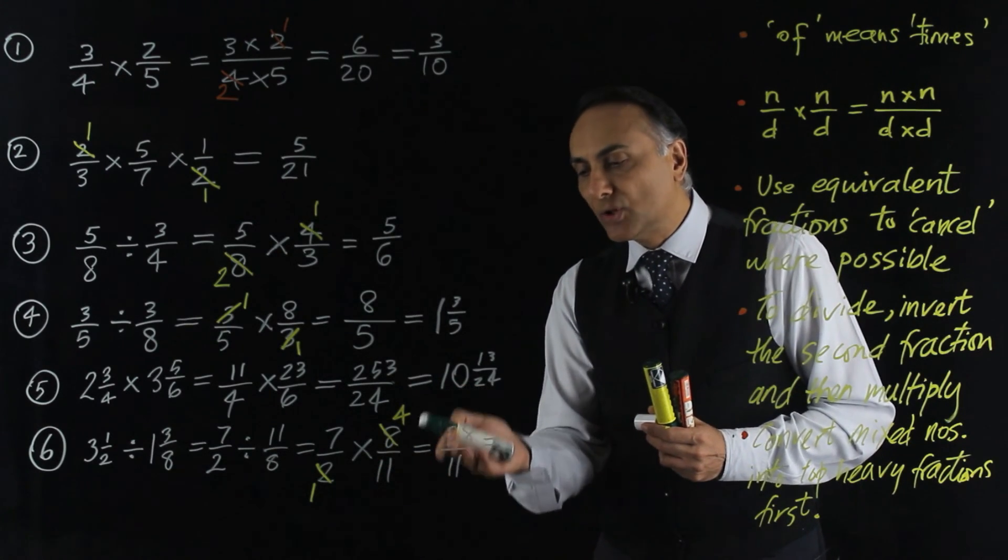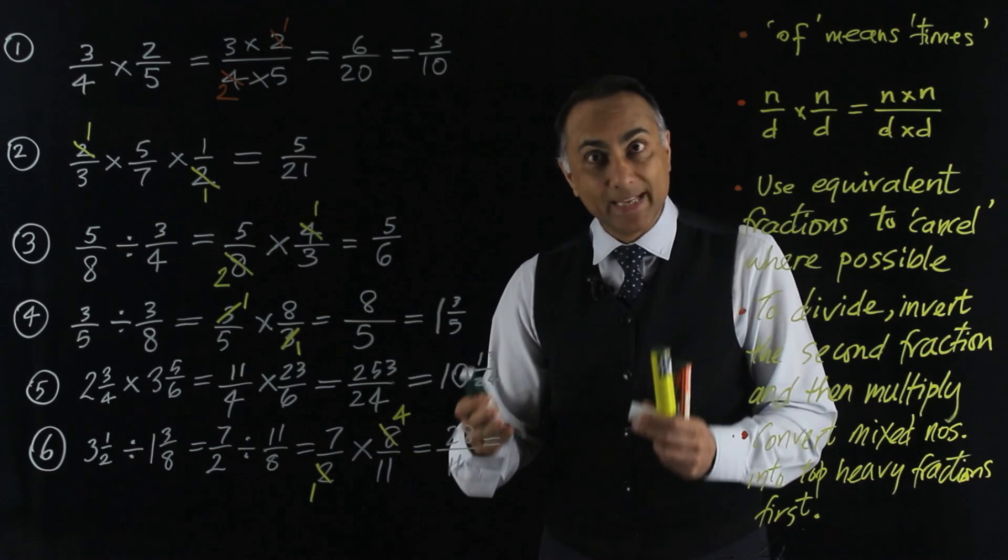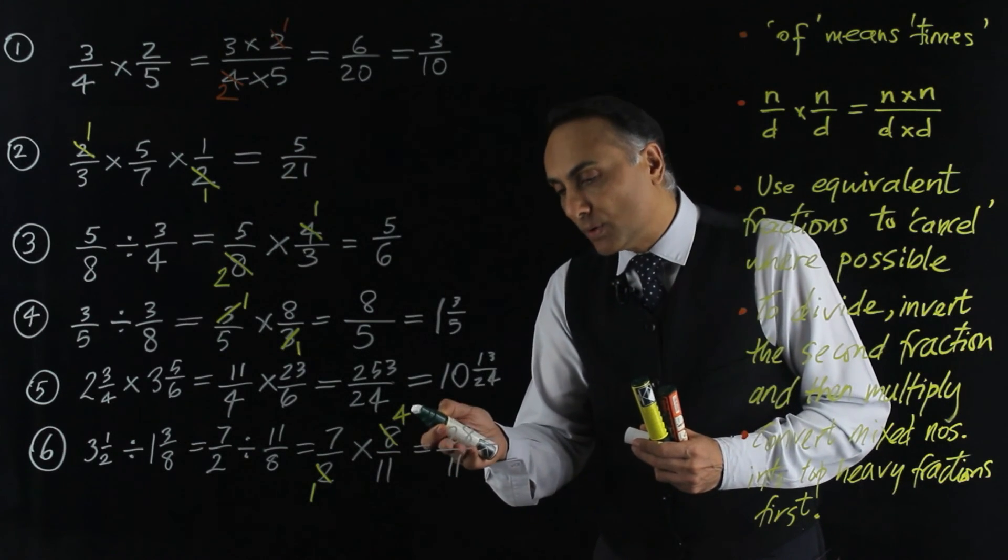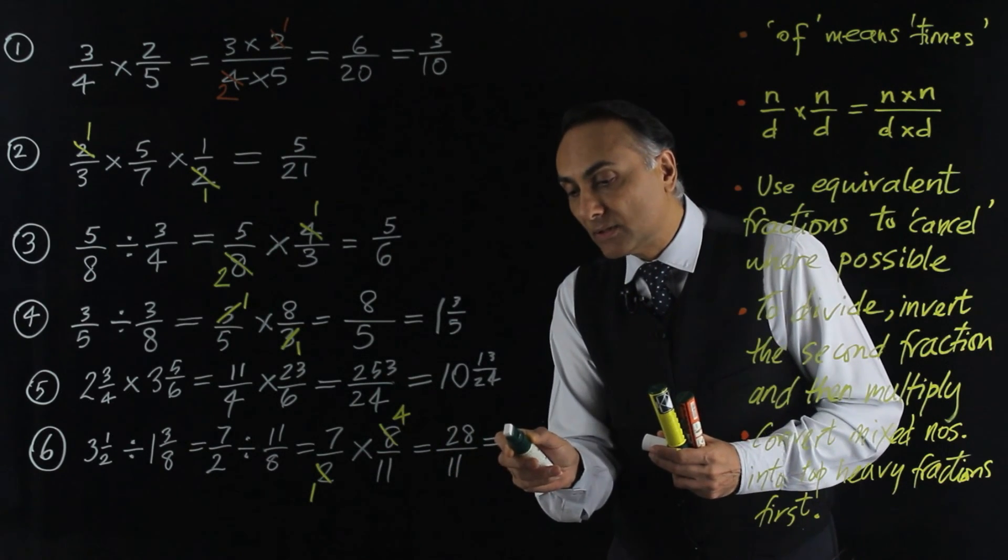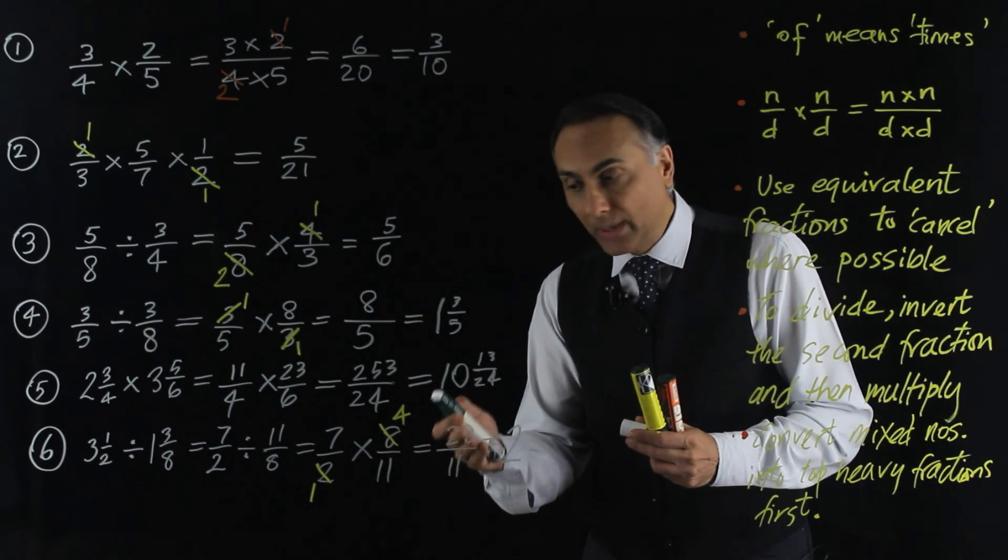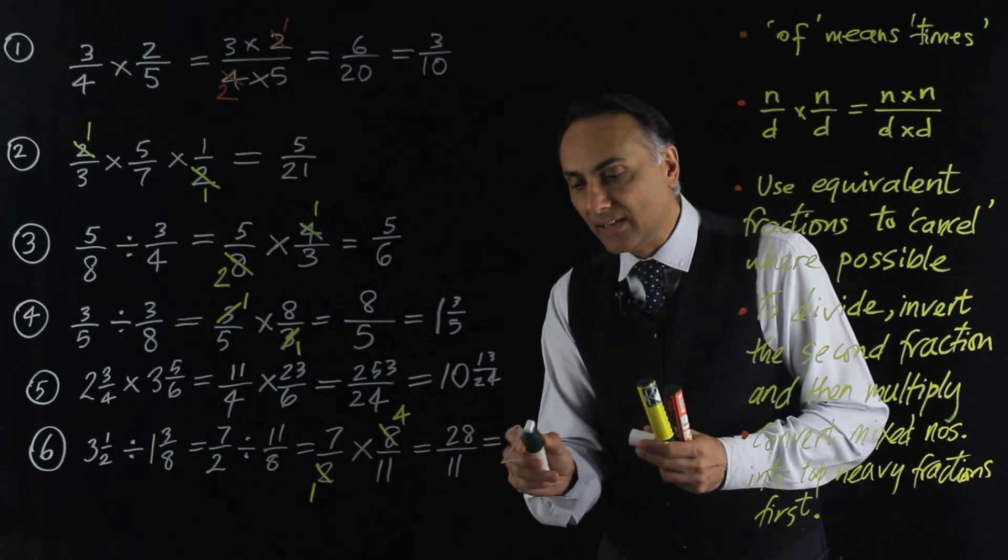because it's top-heavy, I would convert it into a mixed number. So 11 will go into 28 twice. So 2 elevenths are 22. And there's another 6 elevenths left over.